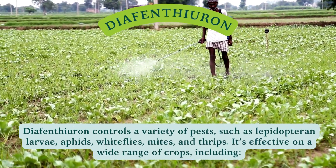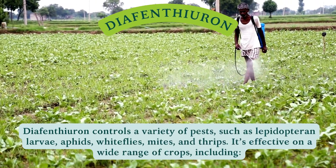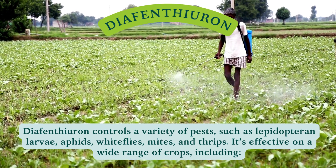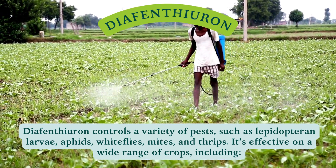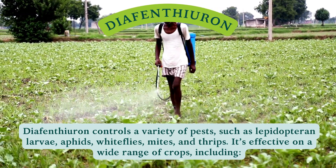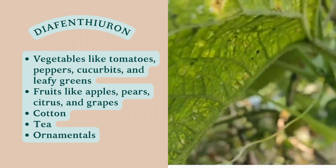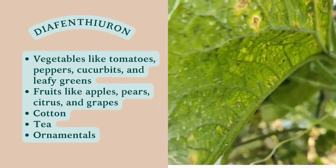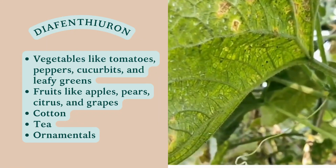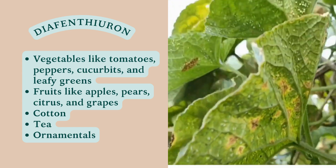Diaphenthyron controls a variety of pests, such as lepidopteran larvae, aphids, whiteflies, mites, and thrips. It is effective on a wide range of crops, including vegetables like tomatoes, peppers, cucurbits, and leafy greens.